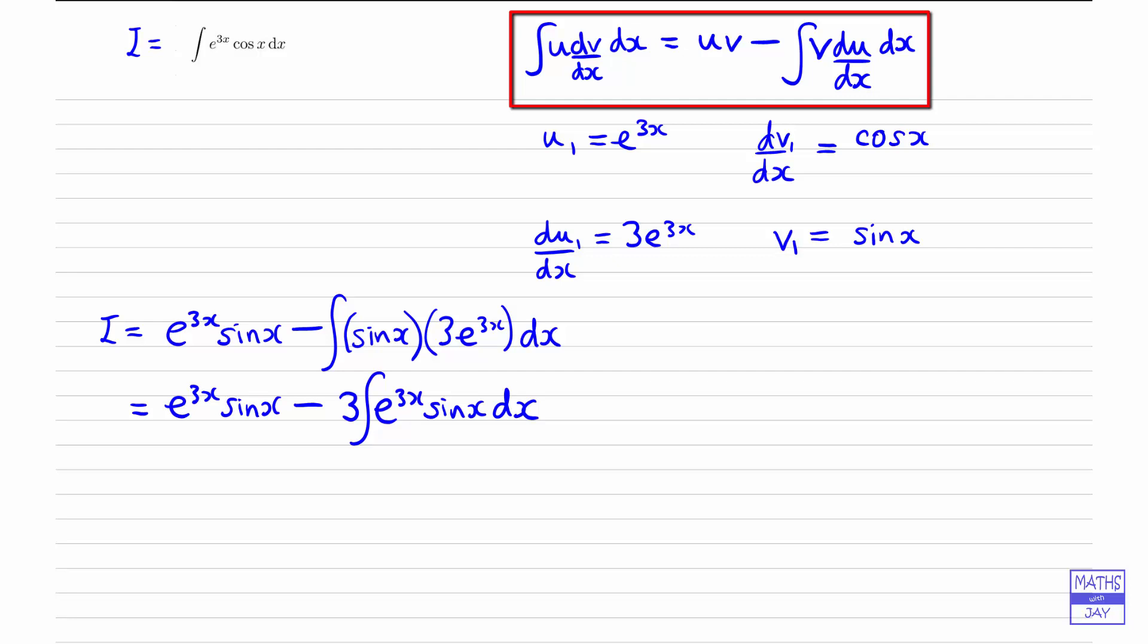But what we do is we now apply the method again, we apply the formula again, and we'll find that everything will work out all right. So what we're going to do is we're going to just concentrate on the integral. So let's give that a name. Let's say i1 is the integral of e to the 3x sinx dx. And now, because I'm applying the formula again, I'm going to be using the subscript 2. So here we need to decide what u2 is going to be.